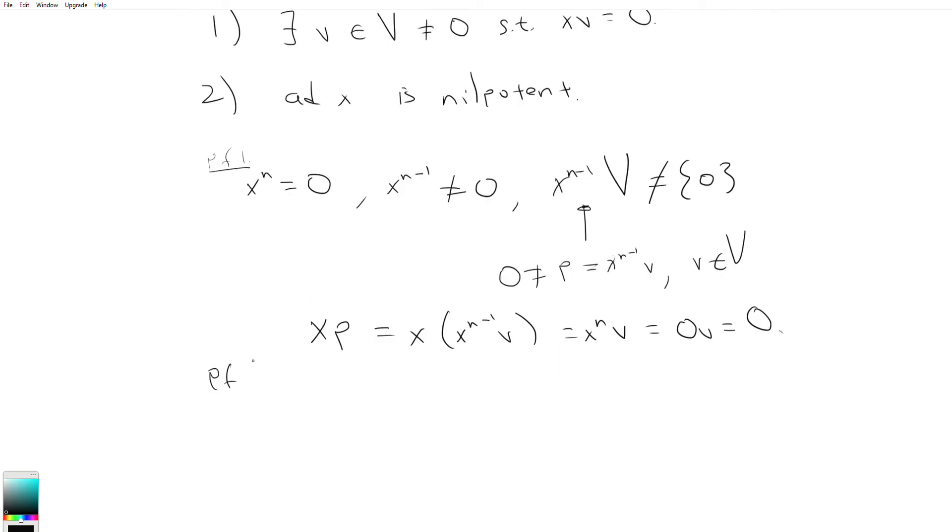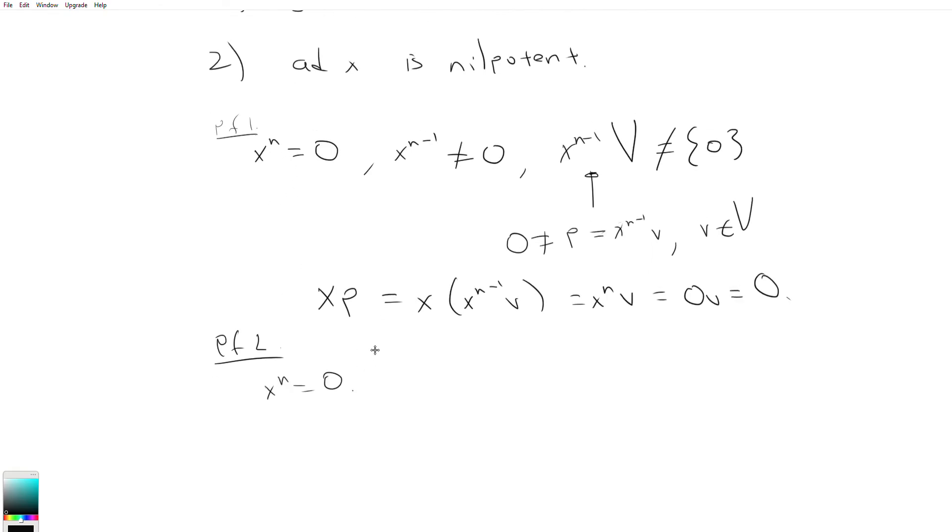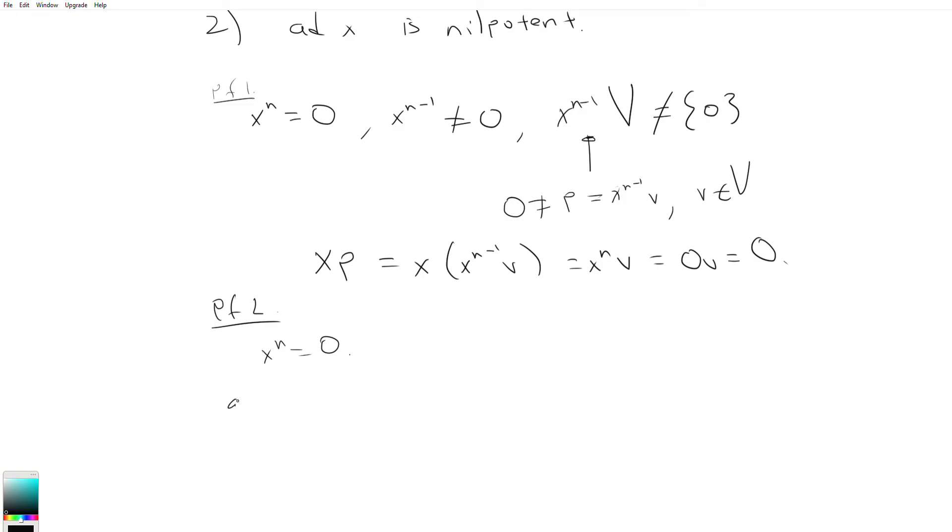Now let's do proof for two. Proof for two is also very simple. So once again, assume x to the n equals zero. So what we're going to do is recall that ad x in the general linear algebra is equal to x, or let's say ad x acting on y, is equal to xy minus yx.